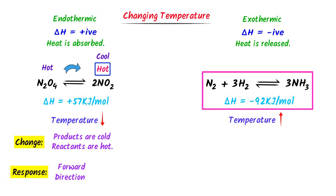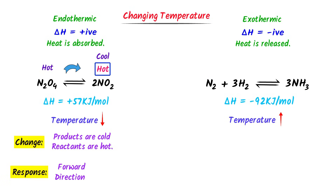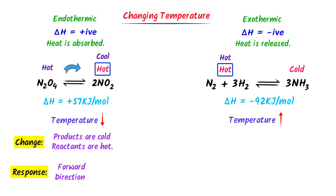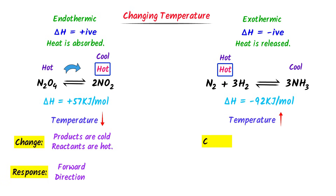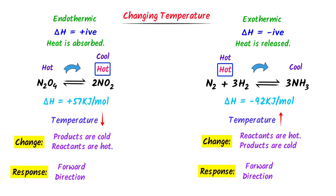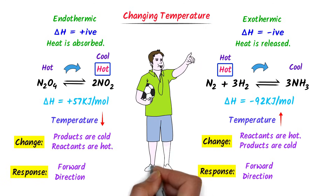In this case, we know that the enthalpy ΔH is negative, so it is an exothermic reaction. In case of an exothermic reaction, I always write 'hot' on the reactants side and 'cold' on the products side. If we increase the temperature, it means we are adding more heat to the hot side. So the change is: reactants become hot and products become cold. The response of the system will be that equilibrium will shift in the forward direction in order to produce more products to counter the effect of temperature. Therefore, if we increase the temperature, the equilibrium will shift in the forward direction.